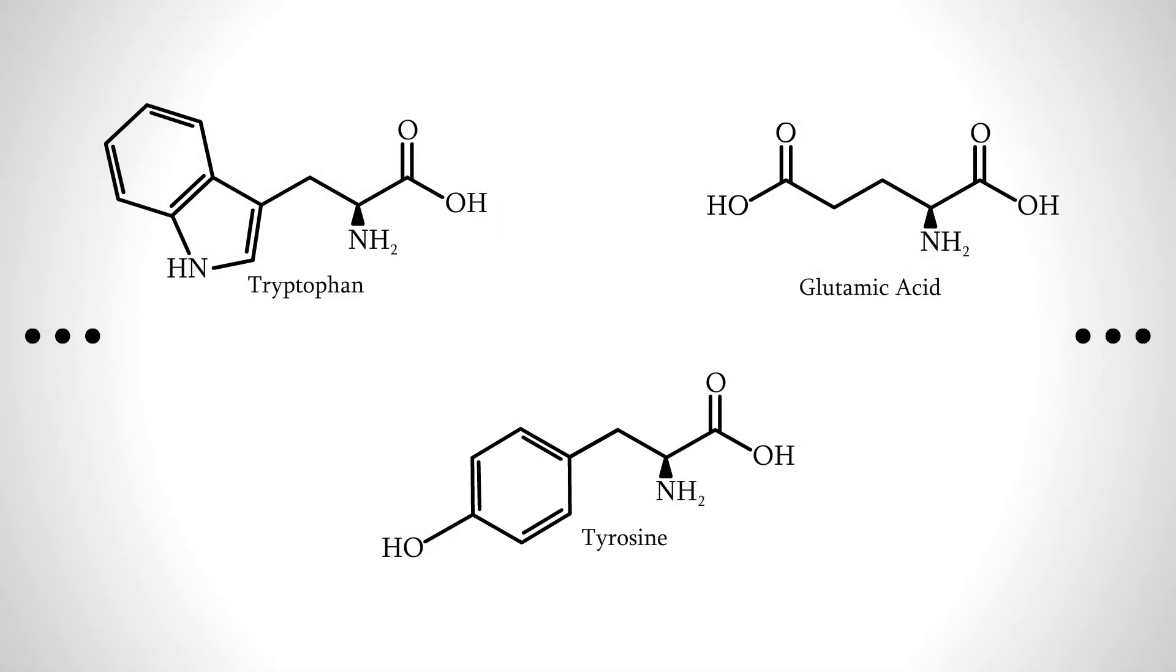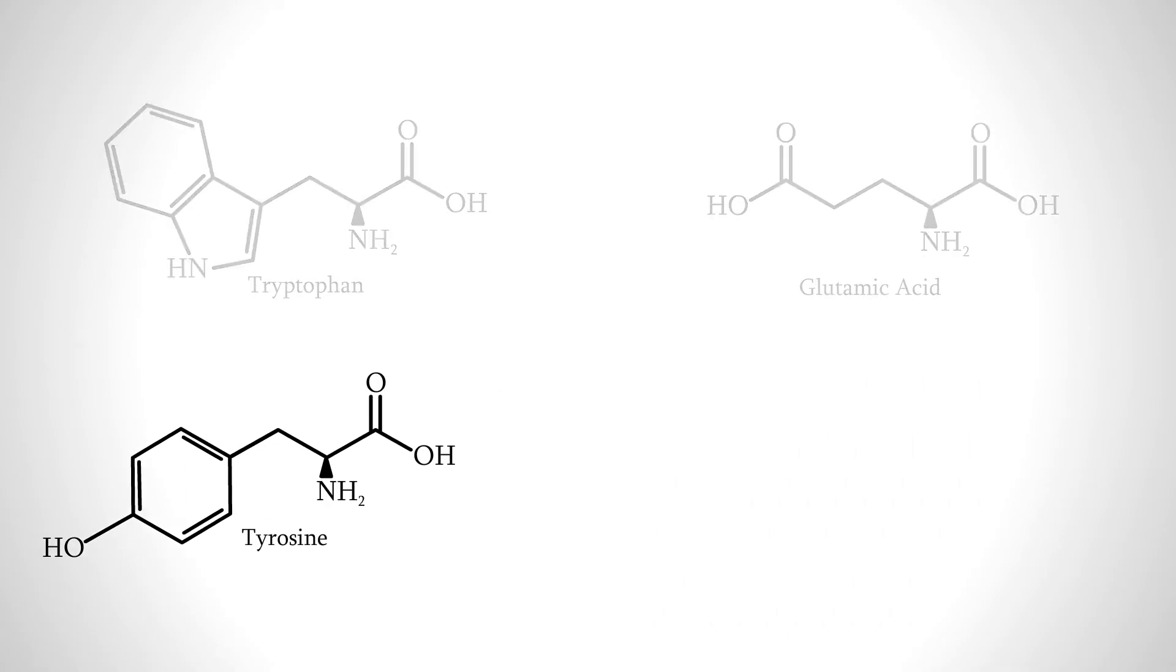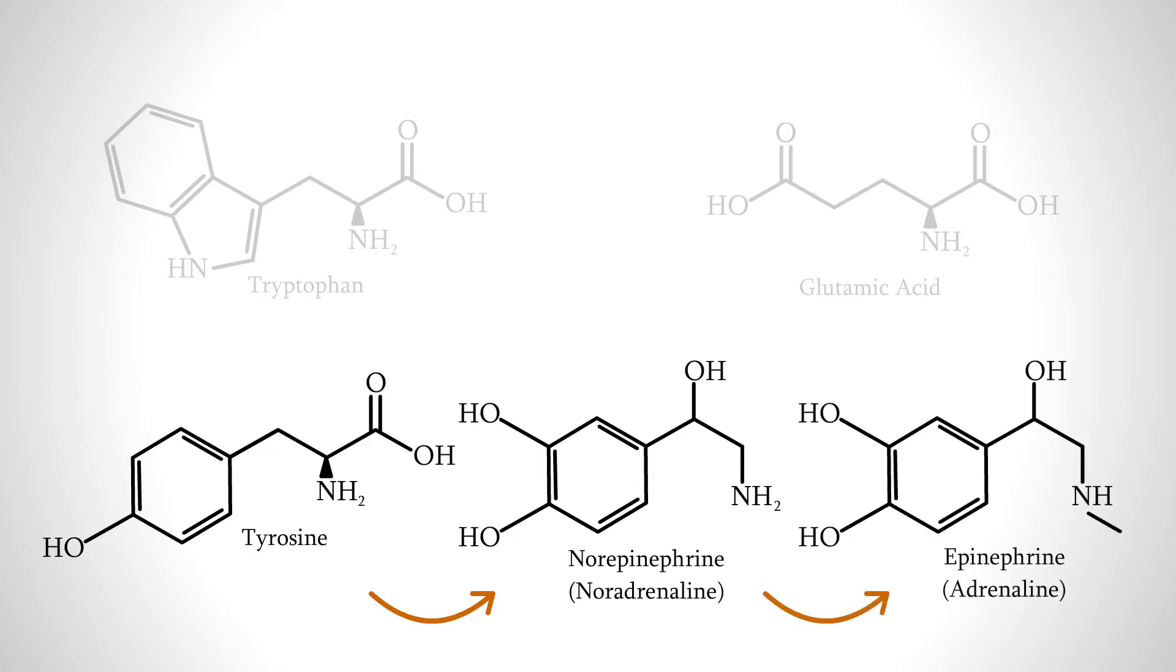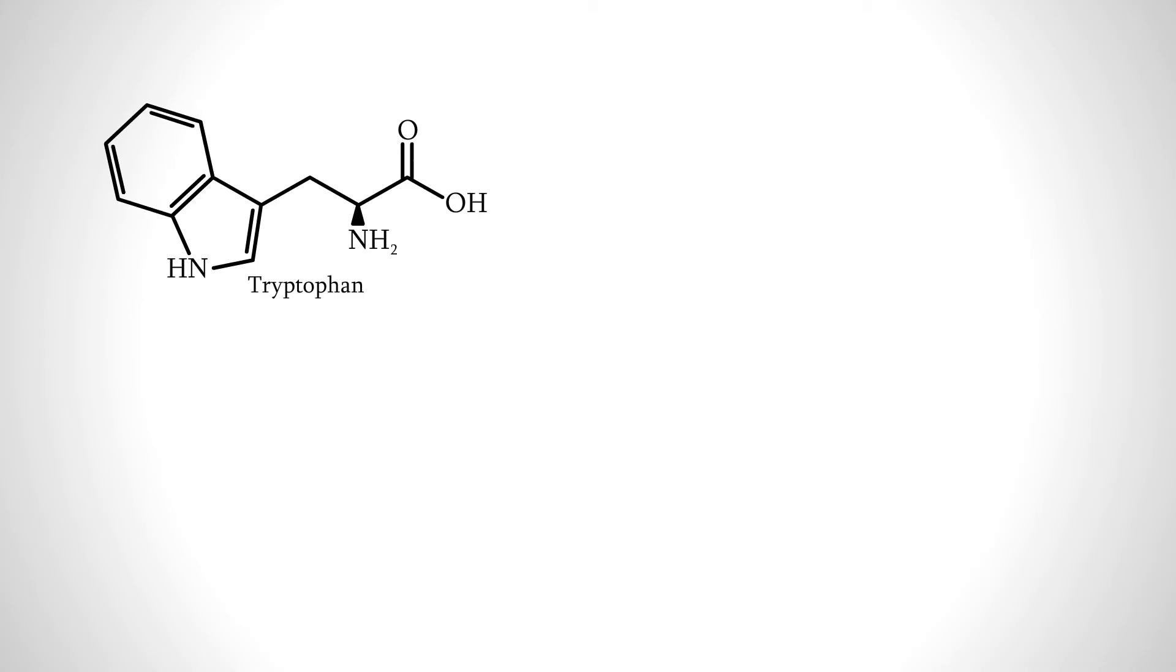Humans have 20 different amino acids which mainly serve as the building blocks of proteins, but some amino acids with a little modification go on to become neurotransmitters, compounds which are the main mode of communication between brain cells, or even hormones which exert their effects throughout the body. The amino acid which becomes the media darling every Thanksgiving is tryptophan.